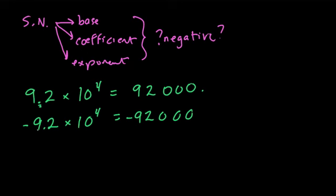And now let's have both the coefficient and the exponent be negative. Well, actually, let's have the exponent be negative first, just the exponent. 9.2 times 10 to the negative 4th. What does that equal? Well, now, this is not a negative number. 10 to the negative 4th means you're dividing 9.2 by 10 four times.